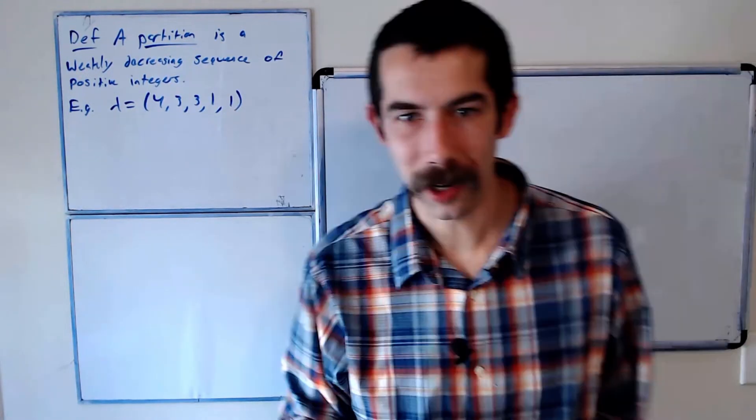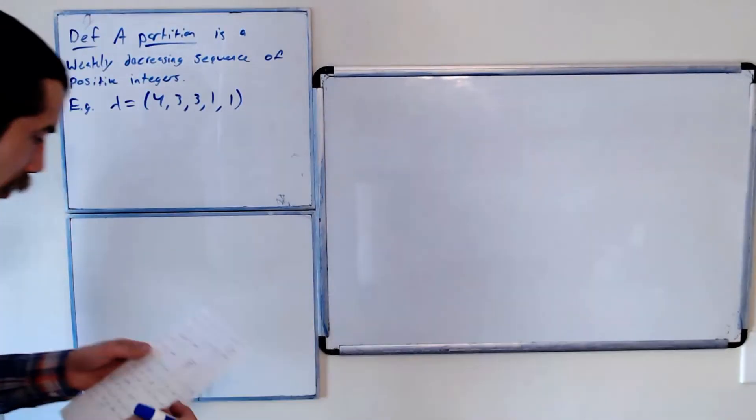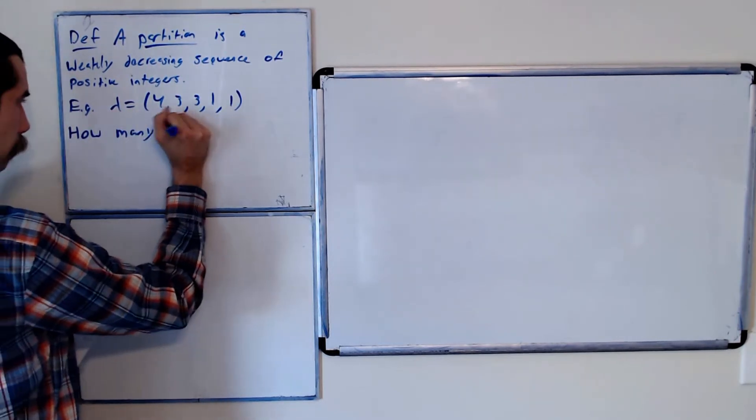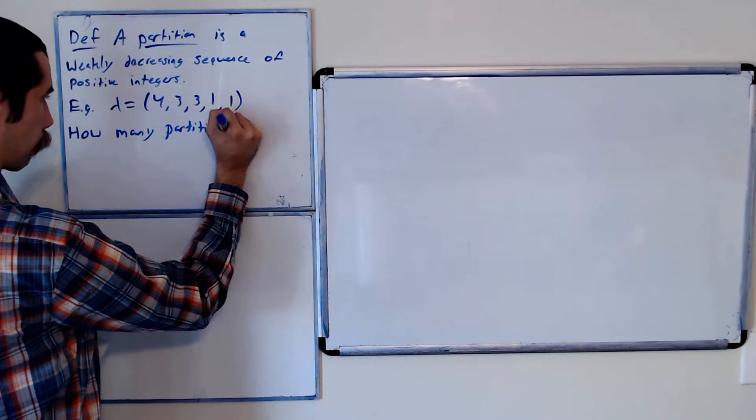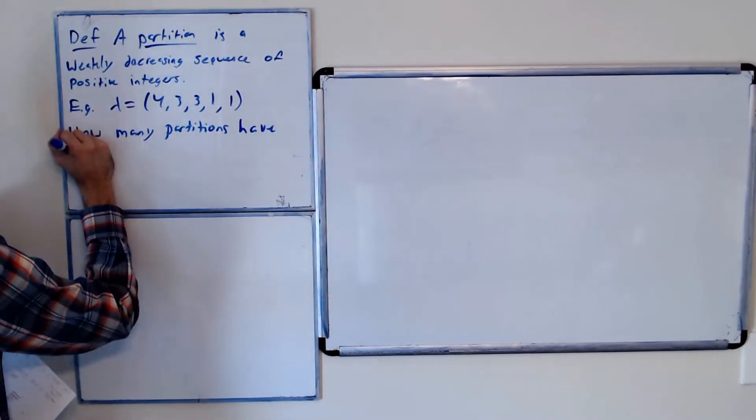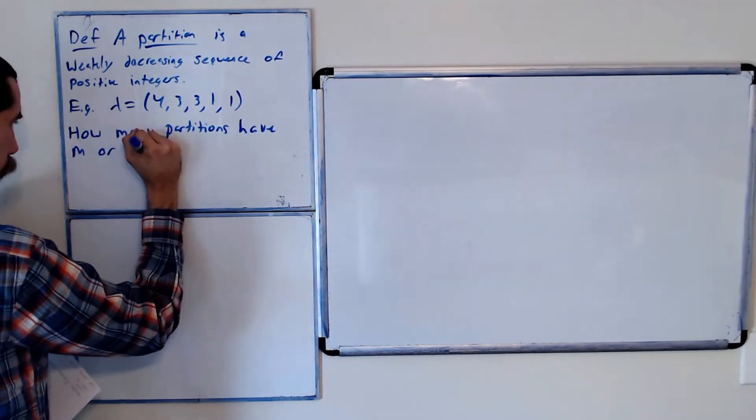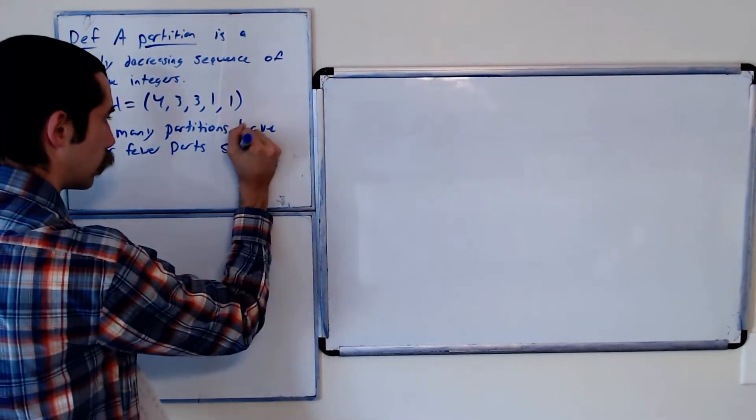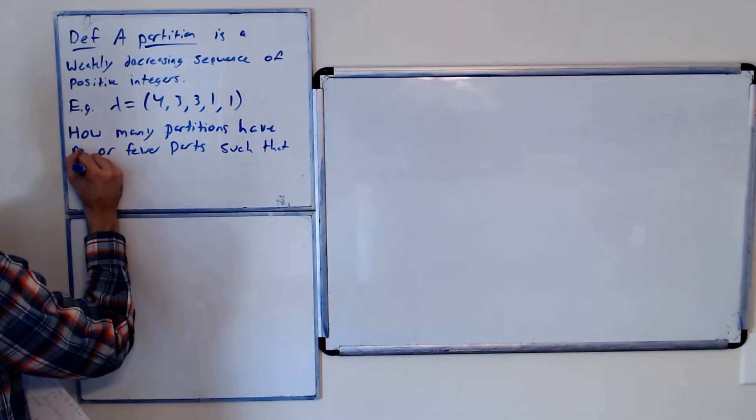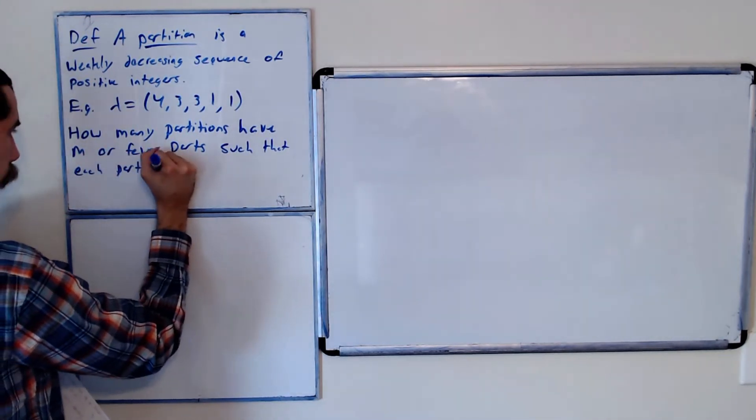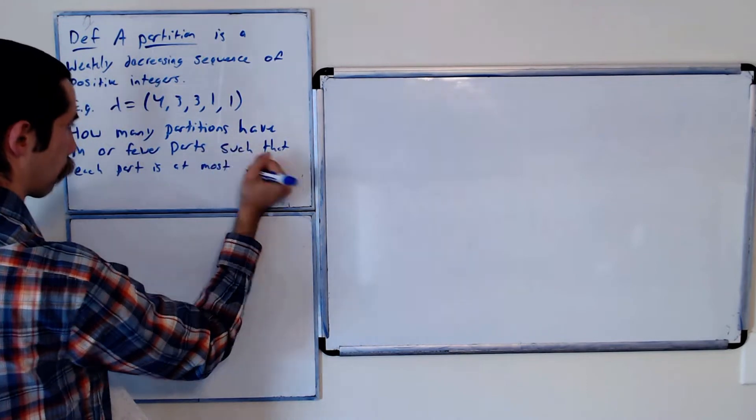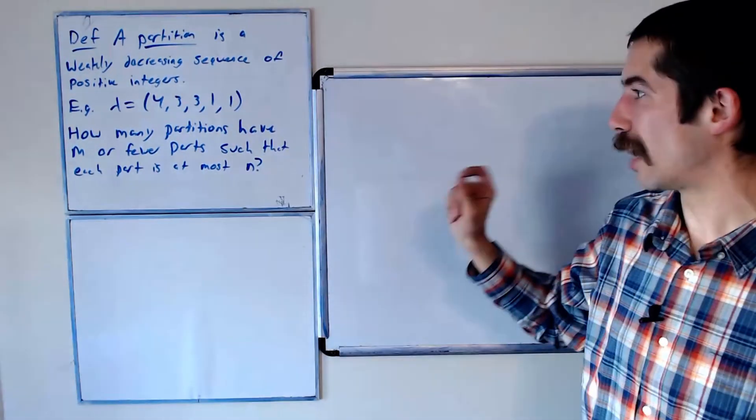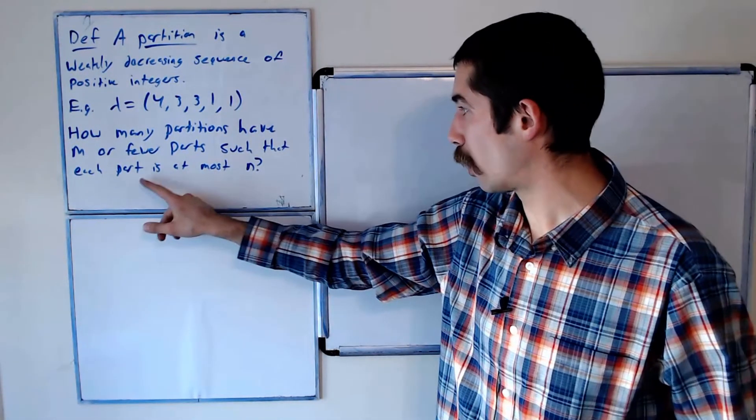The question we're going to work on today, and I encourage you to try it on your own first, is: how many partitions have M or fewer parts such that each part is at most N?